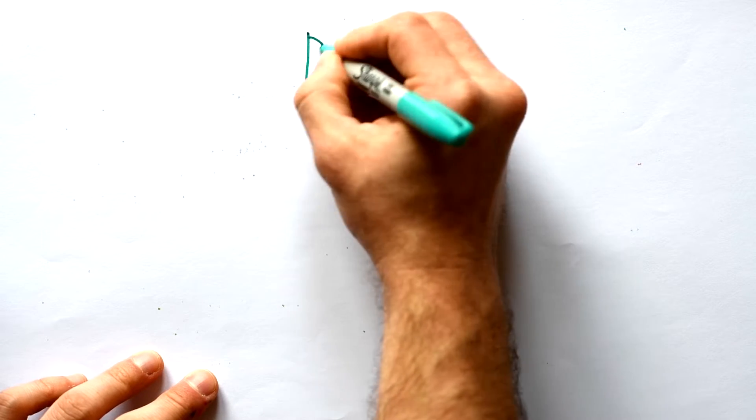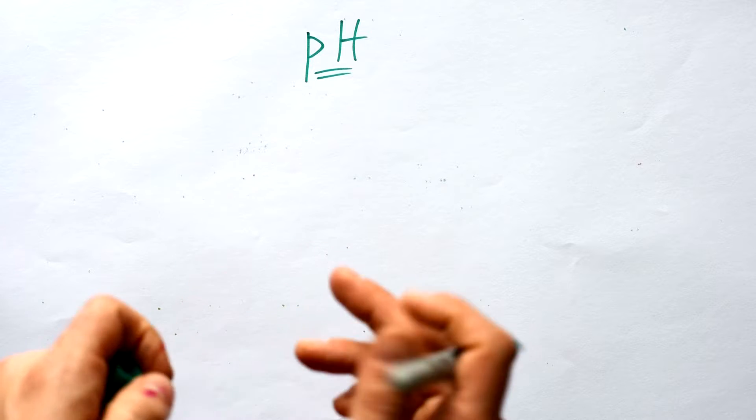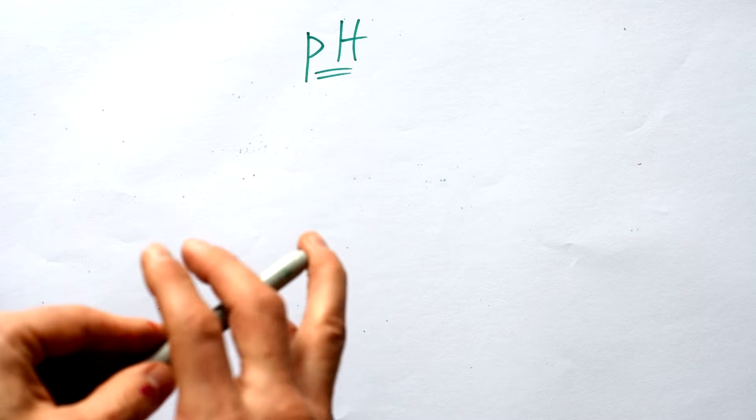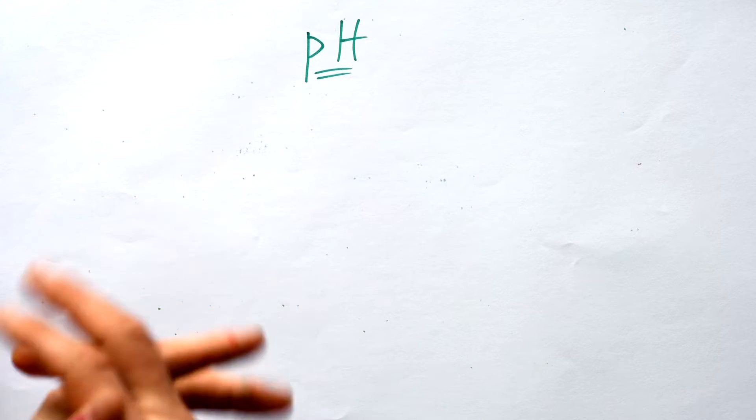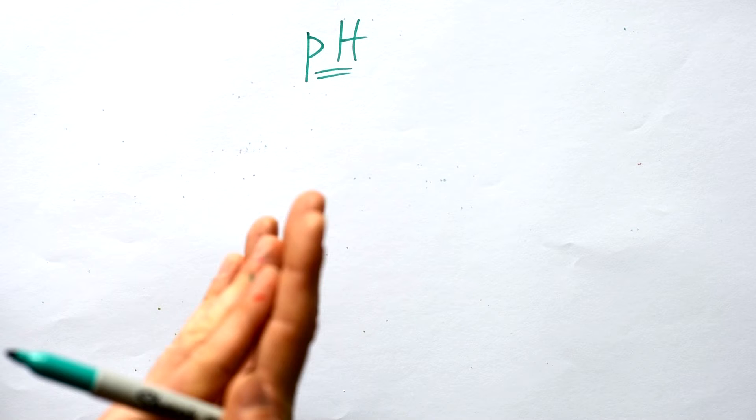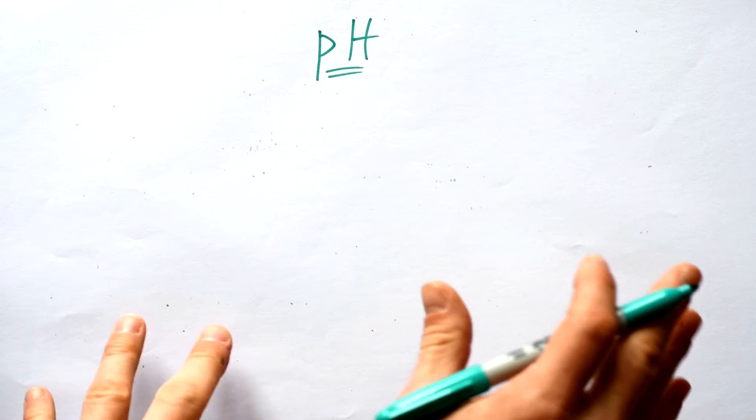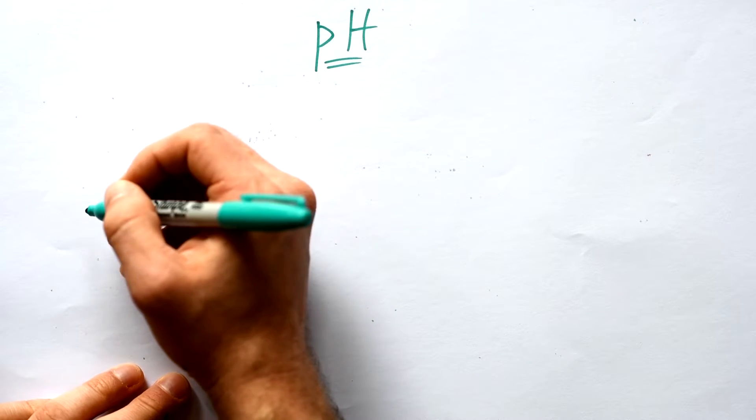Now you've all known about the pH scale probably since year 7. You know that acids have a pH that's below 7 and alkalis or bases have a pH that's above 7. The stronger an acid, the lower the number; the stronger the alkali, the higher the number. In the past that's all you really needed to know, even at GCSE. But nowadays you need to know where the numbers come from, and in order to do that we first need to understand really what an acid and an alkali are.